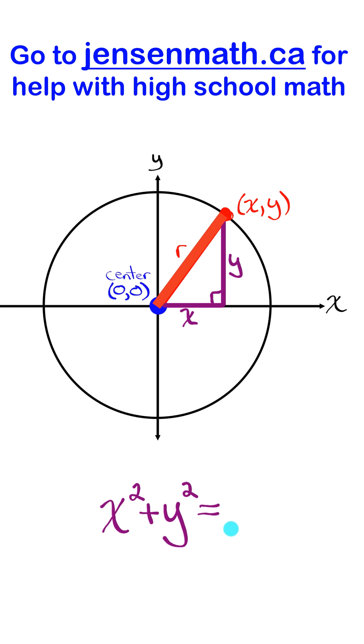In this case, the longest side is the radius, so it's equal to the radius squared. And this is the equation of a circle.